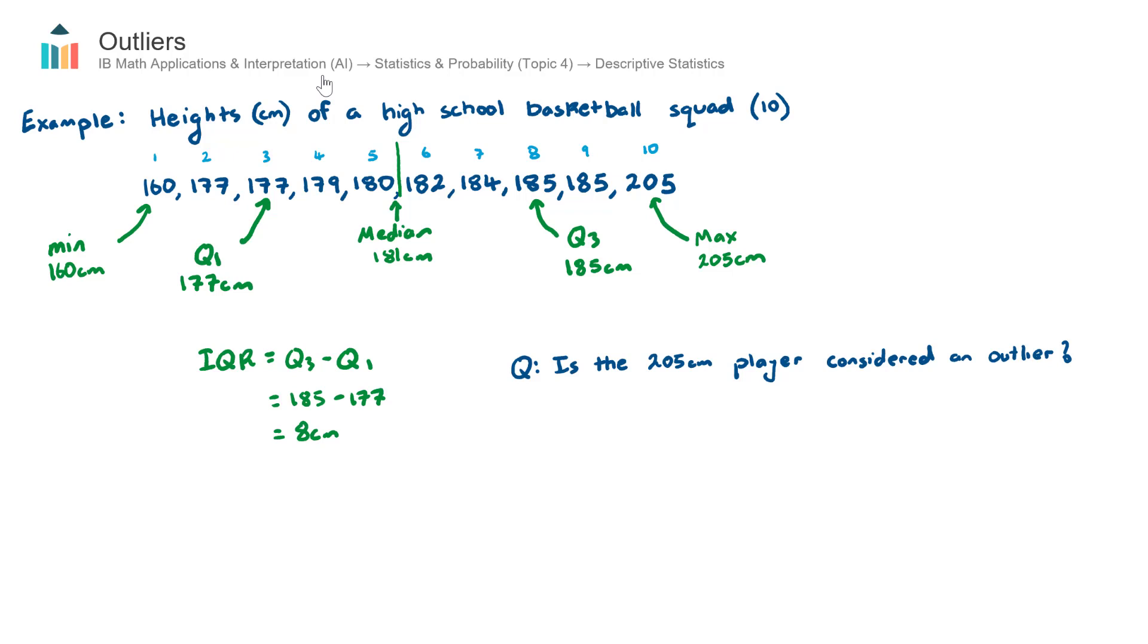Whereas now in the AI course we actually provide a formal definition and can test whether a data value is in fact an outlier or not. So this concept is found in Topic 4 Stats and Prob under the subtopic of descriptive statistics.